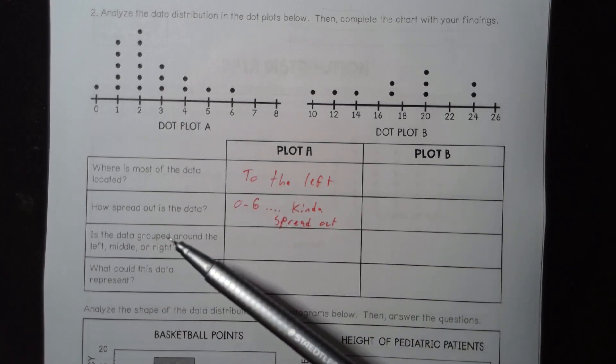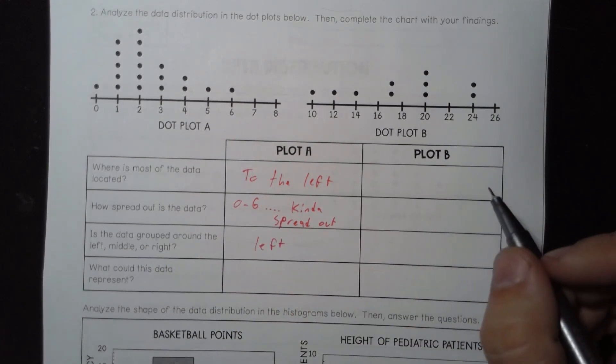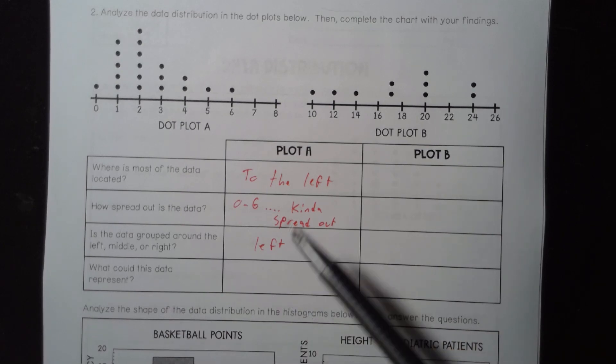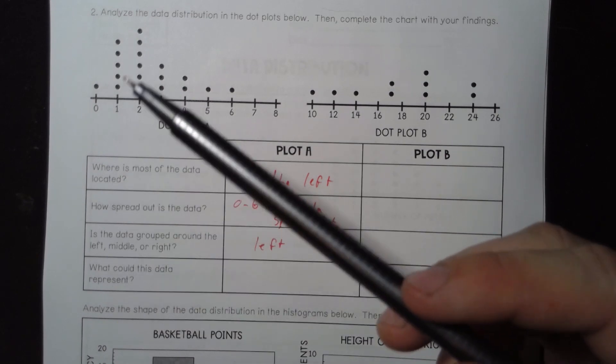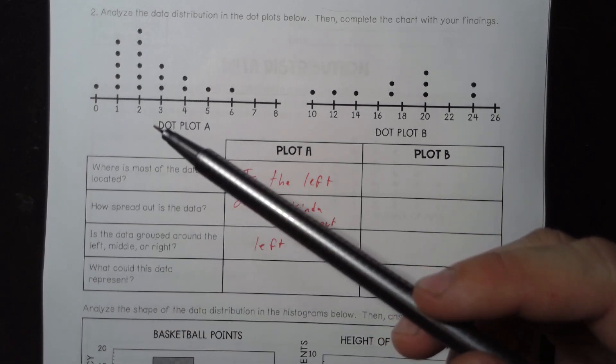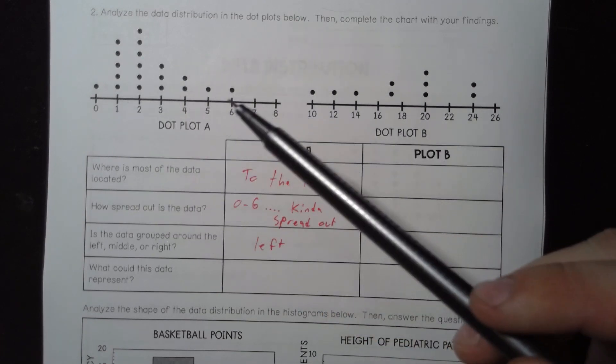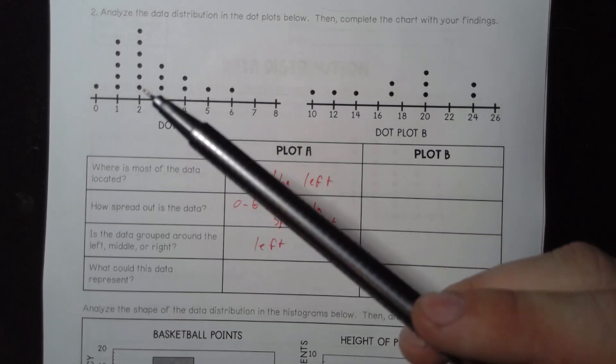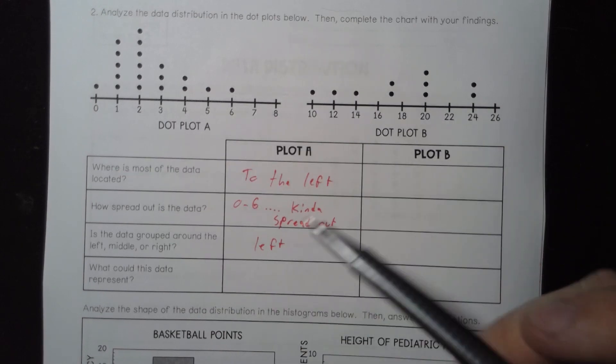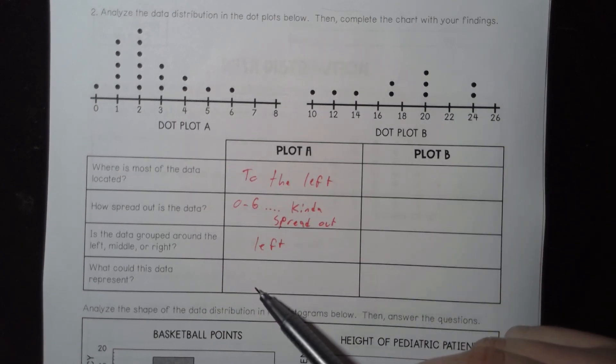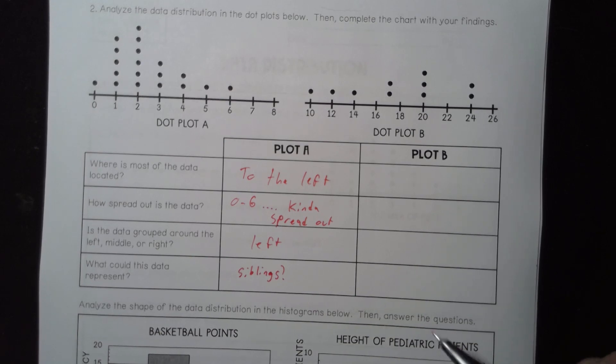Is the data grounded around the left, middle, or right? Well, again, this is mostly to the left. What could this data represent? This could represent how many children do your parents have, this could represent how many pets you have, this could represent how many cars does your family own. Like, these numbers all go from zero to six, and the most common answer was one and two. And to me, that could be how many siblings do you have. There is a ton of different answers you could put here, so I'm going to put siblings, because it could be how many siblings you have.